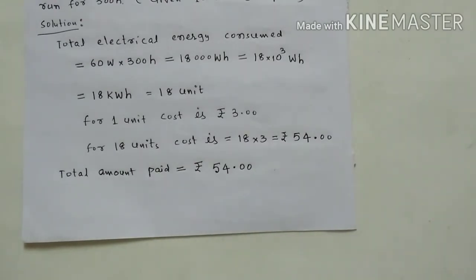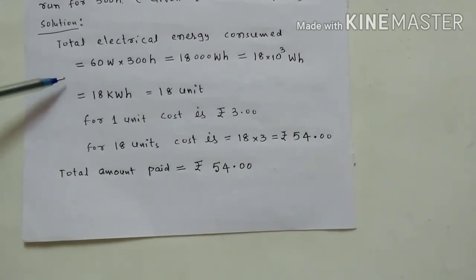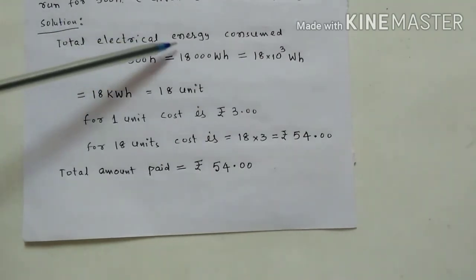Now we are going to calculate how much amount we have to pay for the power company. Because that 60 watt bulb was glowing 300 hours. That is approximately 30 days, one month. Because every day 10 hours it is glowing now.